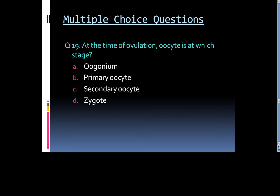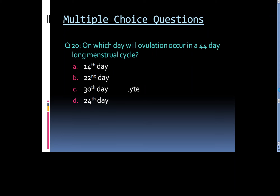Question 19: At the time of ovulation, the oocyte is at which stage? Option A. Oogonium, Option B. Primary oocyte, Option C. Secondary oocyte, or Option D. Zygote.